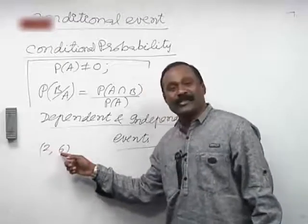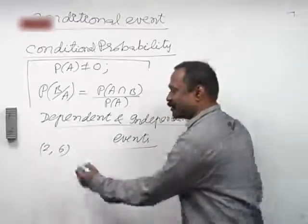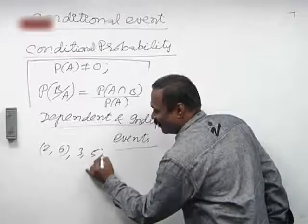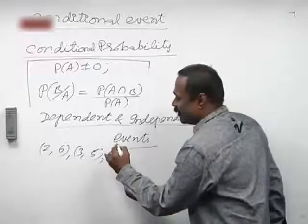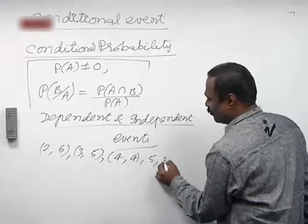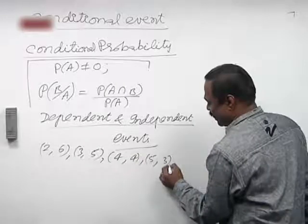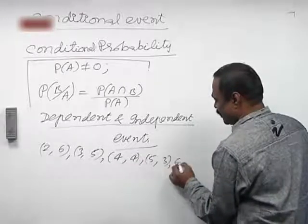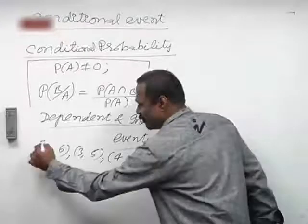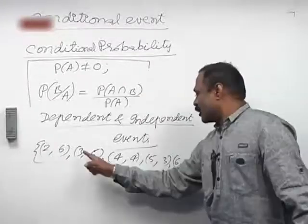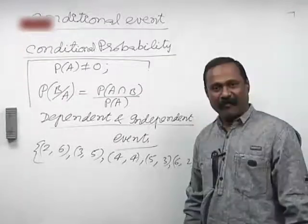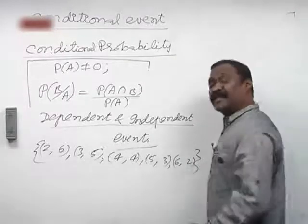So in this case the correct pairs that sum to 8 are: 2,6 — then 3,5 — then 4,4 — then 5,3 — and then 6,2. How many are there totally? You got 5. So the answer is correct.